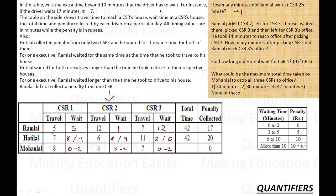Second case. Ramlal picked CSR2. So Ramlal has picked CSR2, left for CSR3's house. So he has travelled 7 minutes, waited there. Waited for 12 minutes. And then he took 14 minutes to reach the office of CSR3. So he took 14 minutes more to reach the office after picking CSR3. How many minutes after picking CSR2 did Ramlal travel? So Ramlal travelled a total of 7 plus 12, 19 plus 14, 33 minutes. Pretty straightforward.